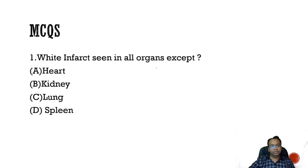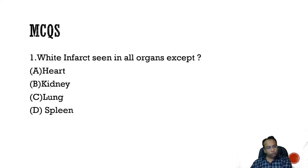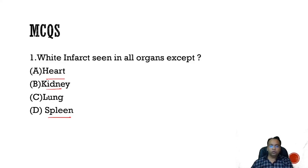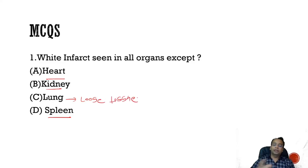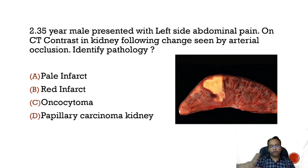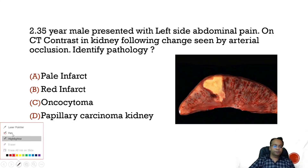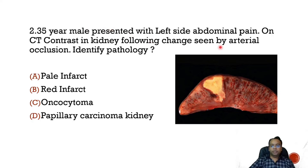MCQ: White infarct is seen in all organs except — heart, kidney, lung, or spleen? White infarct is seen in solid organs, so kidney, heart, and spleen are solid organs showing white infarct. But the lung is loose tissue and not a solid organ, so in the lung there will be red infarct. The exception is lung infarct.